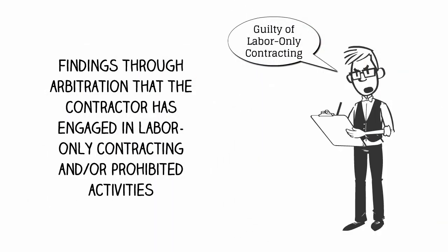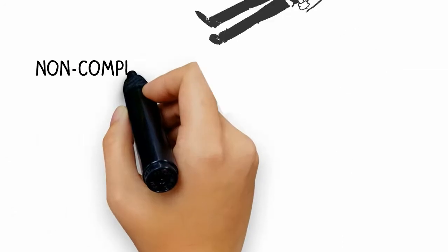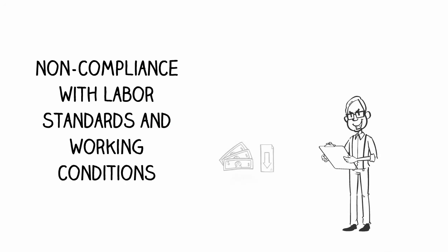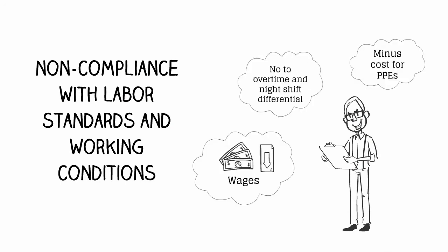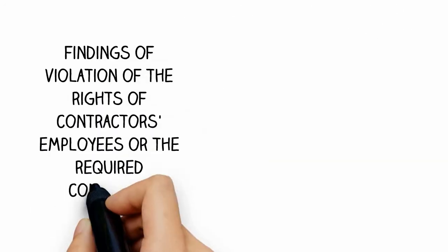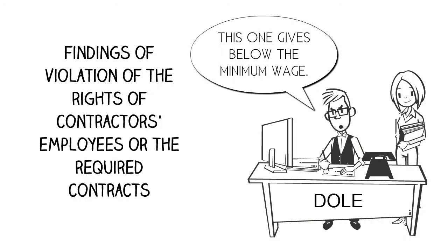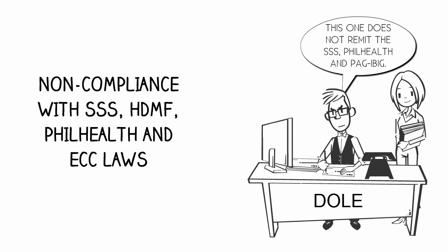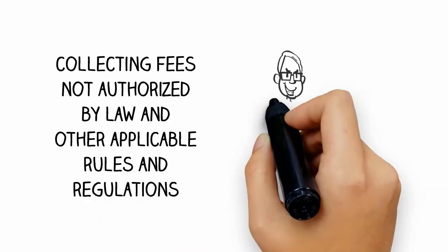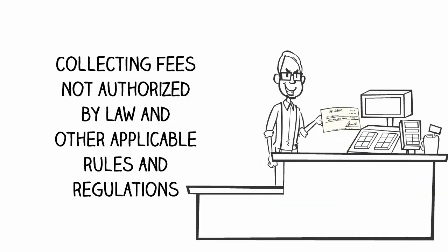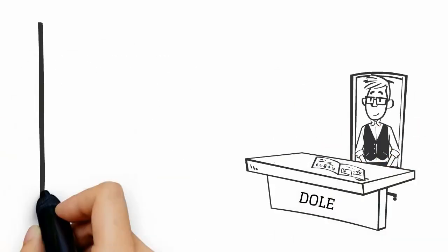Additional grounds include: non-submission of the required semi-annual report; findings through arbitration that the contractor has engaged in labor-only contracting and/or prohibited activities; non-compliance with labor standards and working conditions; findings of violation of the rights of contractors' employees or the required contracts; and non-compliance with SSS, HDMF, PhilHealth, and ECC laws; and collecting any fees not authorized by law and other applicable rules and regulations.